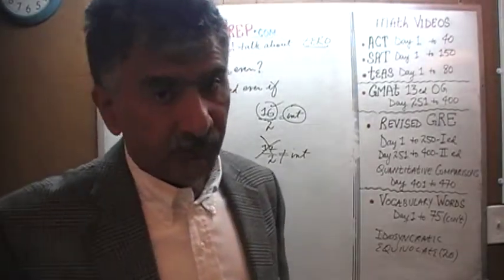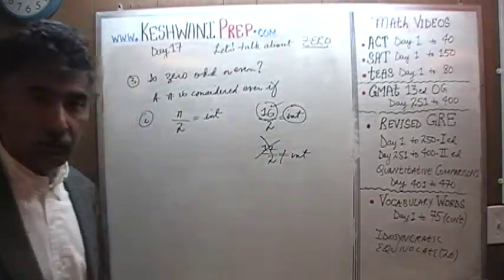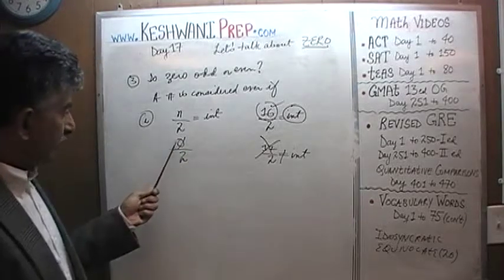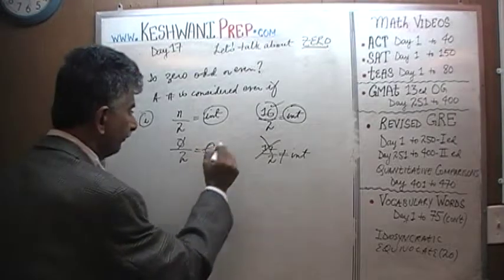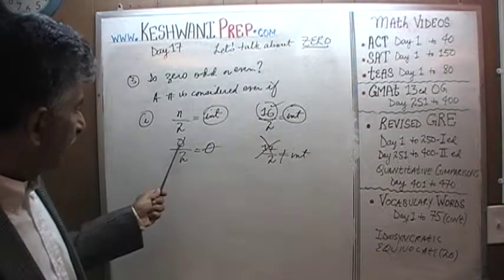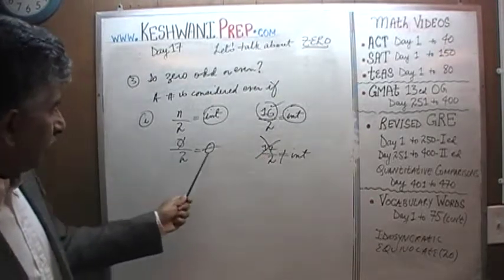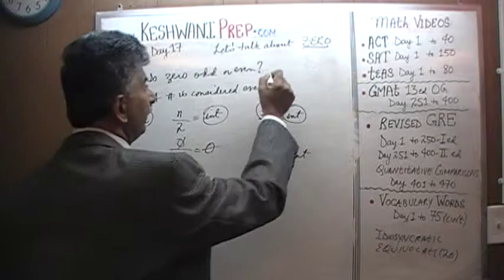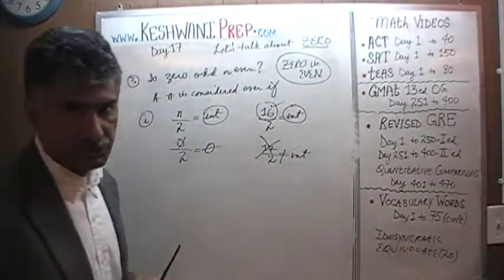Any even number, when divided by two, yields an integer. What about zero? Can we divide it by two? If we take zero divided by two, do we end up with an integer? The answer is yes — zero divided by two is zero, and zero is an integer. Therefore, zero is even. Zero is an even integer.